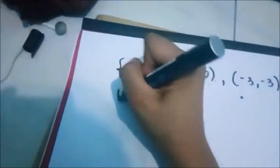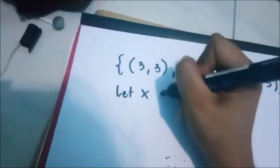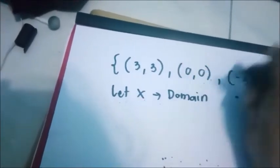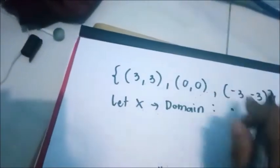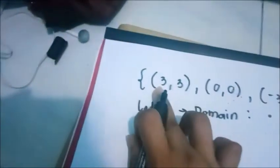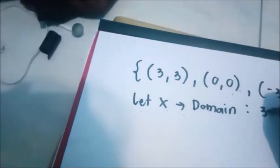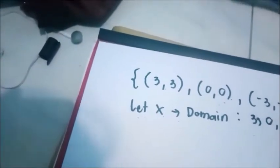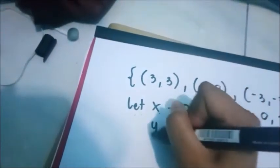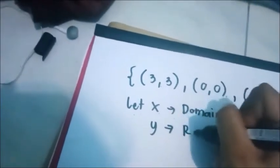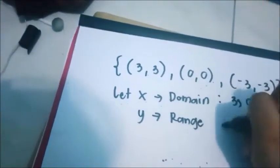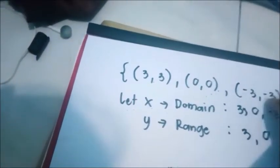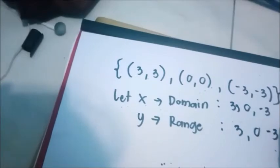Now, let X be the domain. What are the domain values of the given ordered pairs? We have 3, 0, and negative 3. How about Y or the range? We have 3, 0, and negative 3.